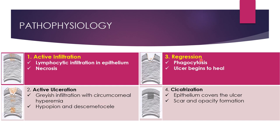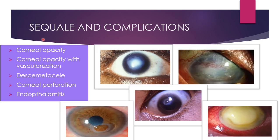Stage three is the stage of regression, induced by natural host defense mechanisms and antimicrobial treatment. The ulcer begins to heal and the epithelium starts growing over its edges. Stage four is the stage of cicatrization, in which there is formation of scar and corneal opacity. The terminal course depends on the virulence of the infecting organism, the host defense mechanisms, and the treatment received. The ulcer may heal with formation of corneal opacity with or without vascularization.